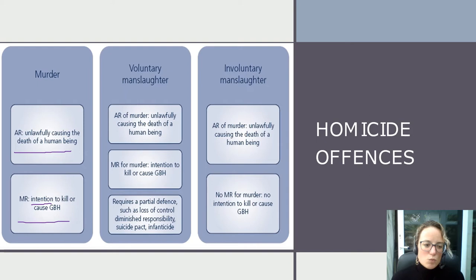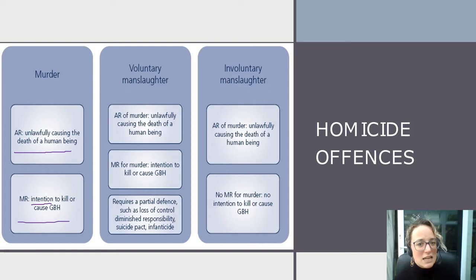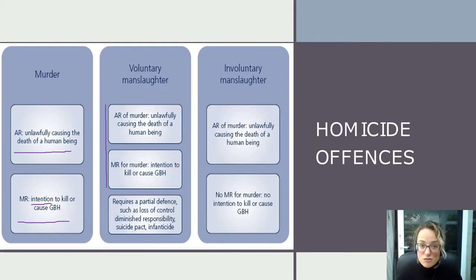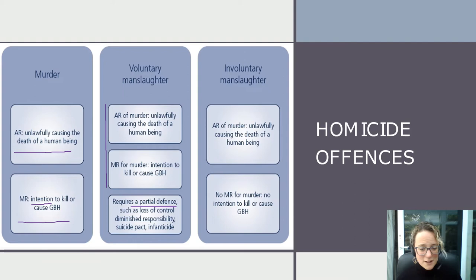One of the learning outcomes for this taster lecture was to understand the relationship between murder and other offences, and in particular murder and manslaughter. You can see from the other two columns on this slide that we have something called voluntary manslaughter and something called involuntary manslaughter. Voluntary manslaughter contains the same two elements as murder — the actus reus is the same and the mens rea is the same — but we have an extra box illustrating the existence of defences and how that affects whether somebody is guilty.